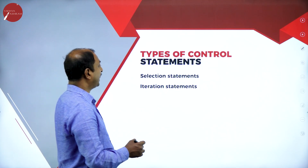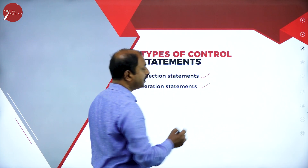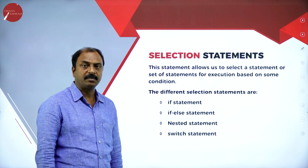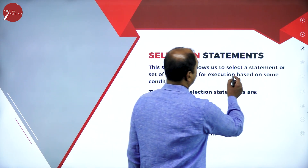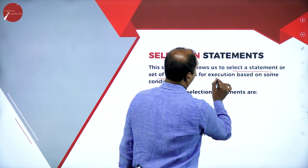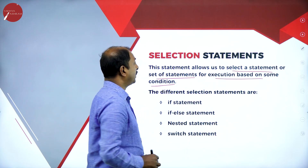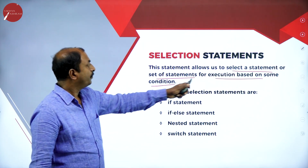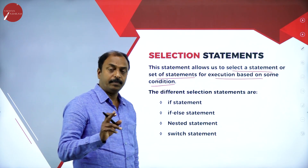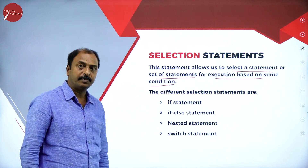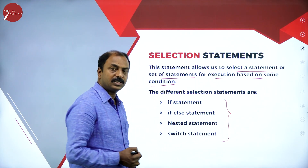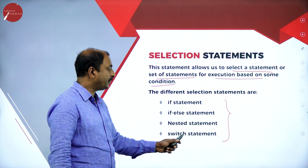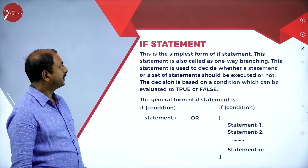There are two types of control statements: selection statements and iteration statements. Selection statements allow us to select a statement or set of statements for execution based on a certain condition. The different types of selection statements are: if statement, if-else statement, nested if statement, and switch case statement.